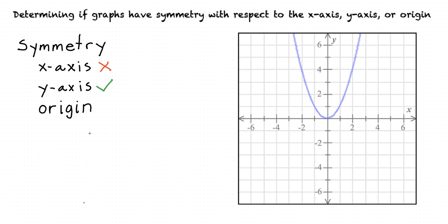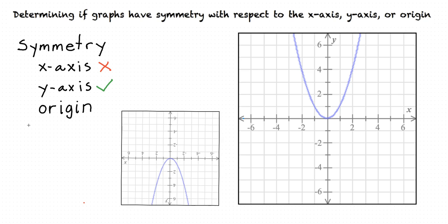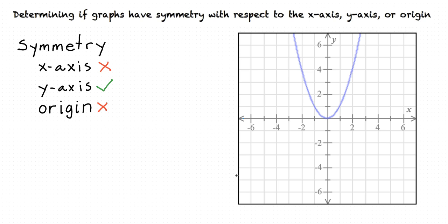Now let's check to see if there's symmetry with respect to the origin. What would happen if we spun our graph 180 degrees? When the graph is rotated 180 degrees, it doesn't look the same at all, so there's no symmetry with respect to the origin. So now we know that this graph does not have symmetry with respect to the x-axis or the origin, but it does have symmetry with respect to the y-axis.